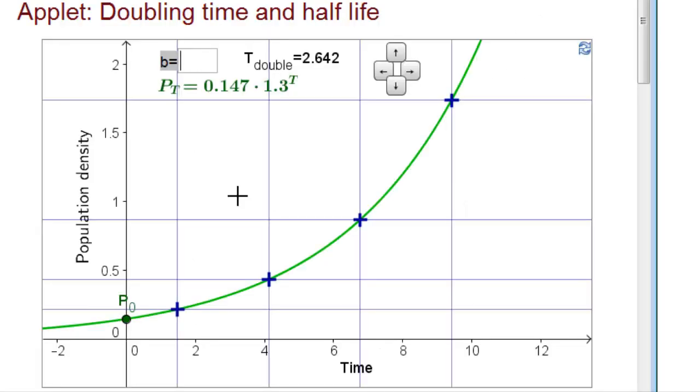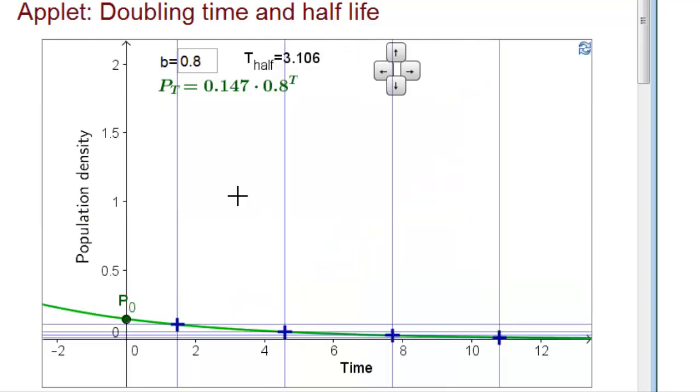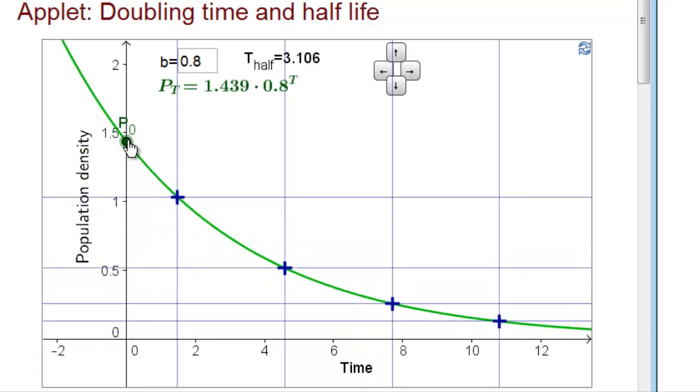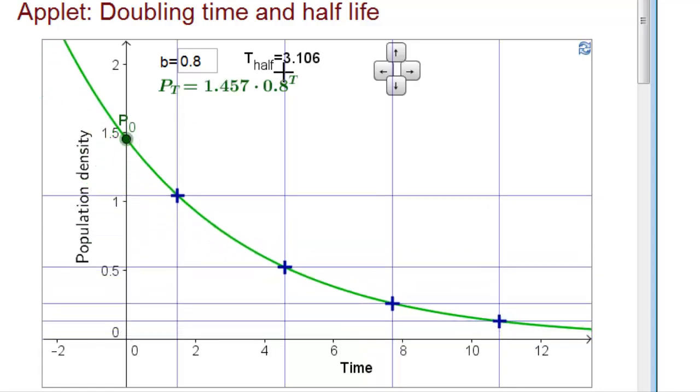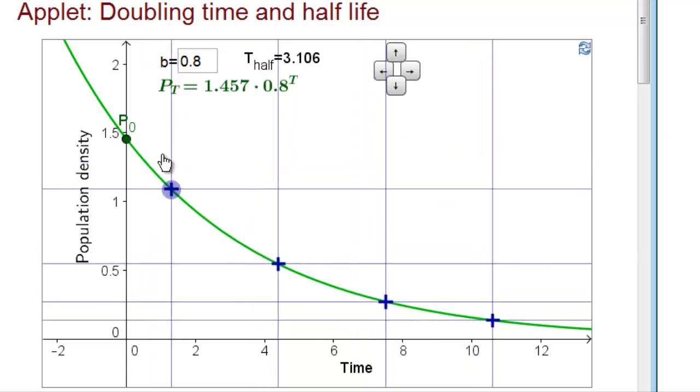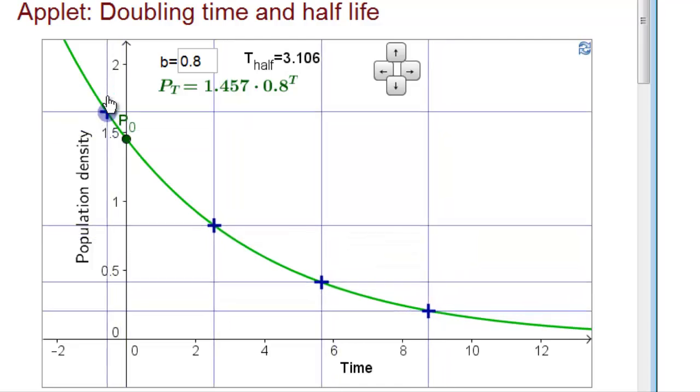The doubling time applet turns into the half-life applet if we make the parameter b less than 1. Now we get exponential decay, and the half-life is automatically calculated as the log of one half over the log of b. Again, the distance between the vertical lines is the half-life, and each horizontal line is at one half the height of the previous.